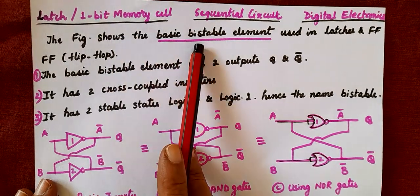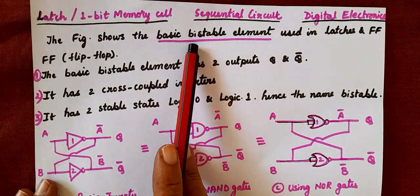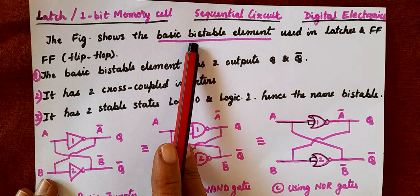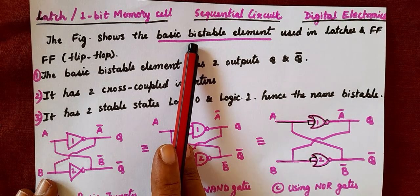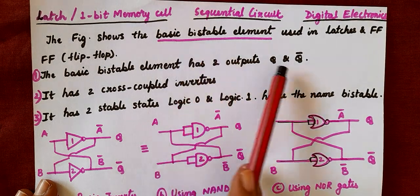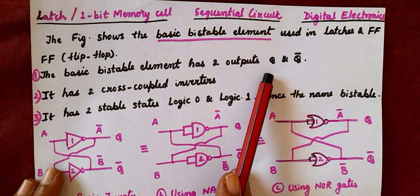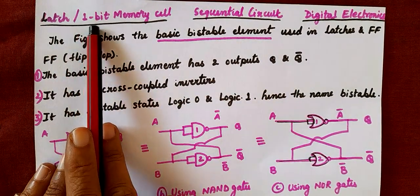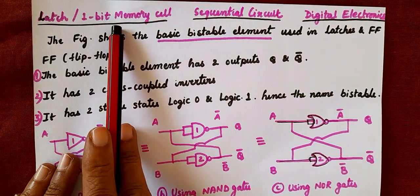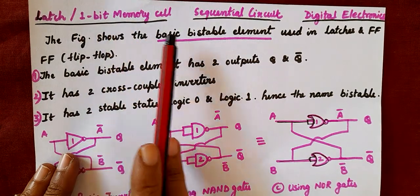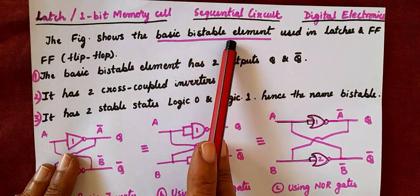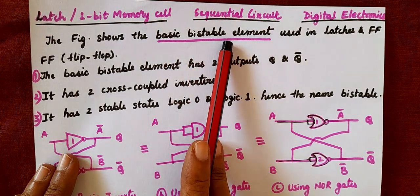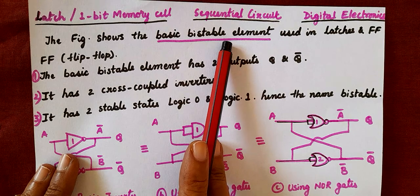Why is it known as a bistable element? Bi means it has two stable states. It will have two outputs Q and Q-bar — one will be at logic 0 and the other will be at logic 1. A latch or 1-bit memory cell is also known as a bistable element because it has two stable states: logic 0 and logic 1.